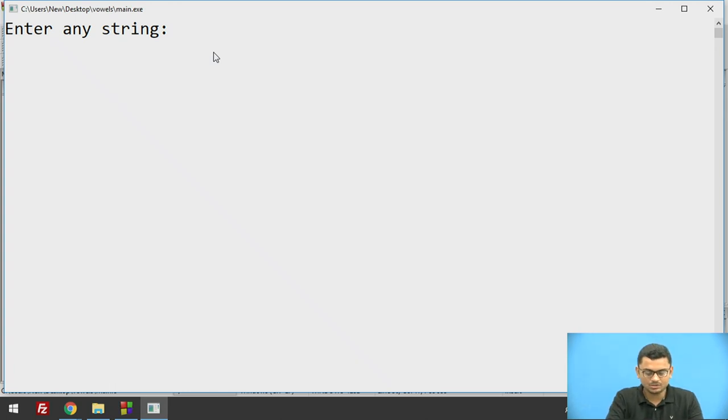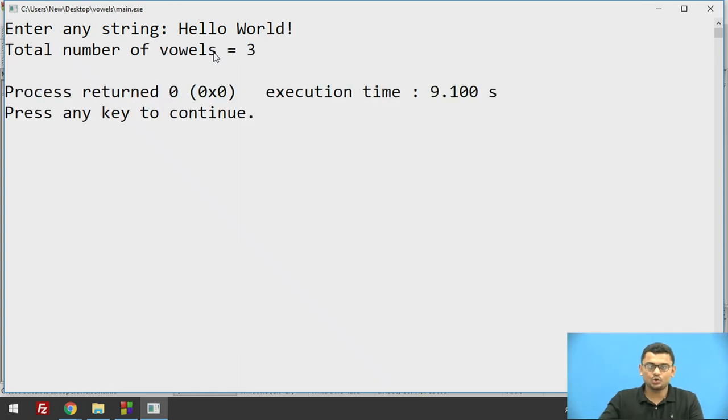I take a small string hello world. So the total number of vowels in this string is 3 where e, o, and o are vowels.